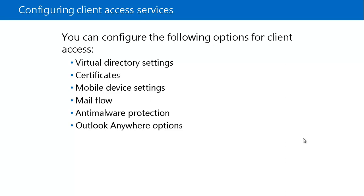For Virtual Directory Settings, you use these settings to configure each of the virtual directories that host services in IIS — for example, Outlook Web Access, which is hosted in IIS on Exchange Server. For each virtual directory, you can configure general settings and authentication options, such as authenticating a user by first name, last name, or by domain name and username.